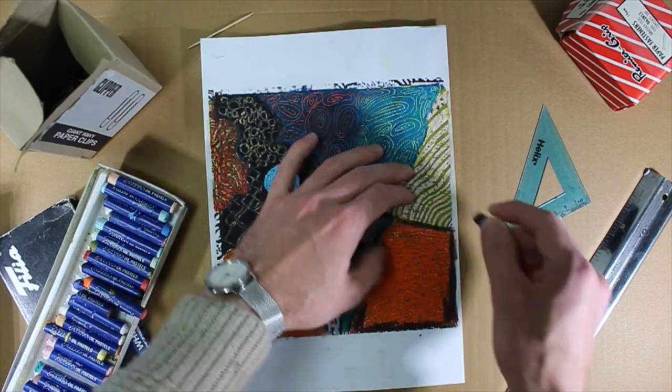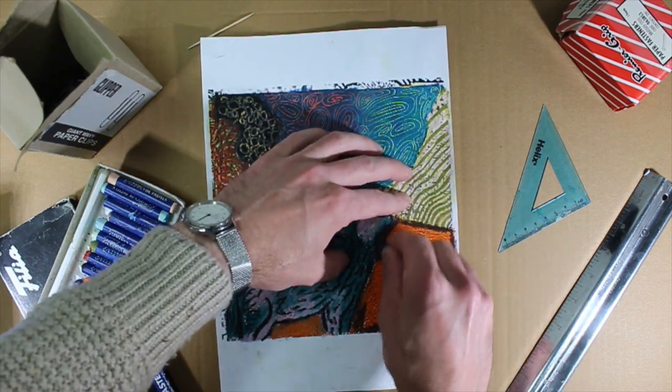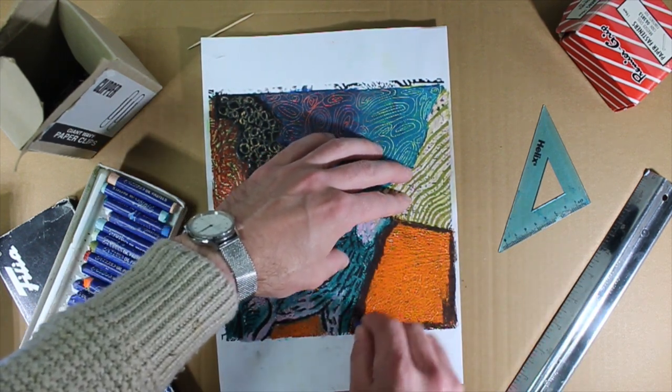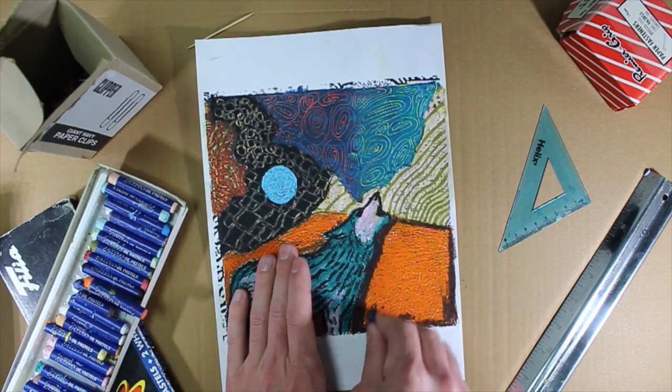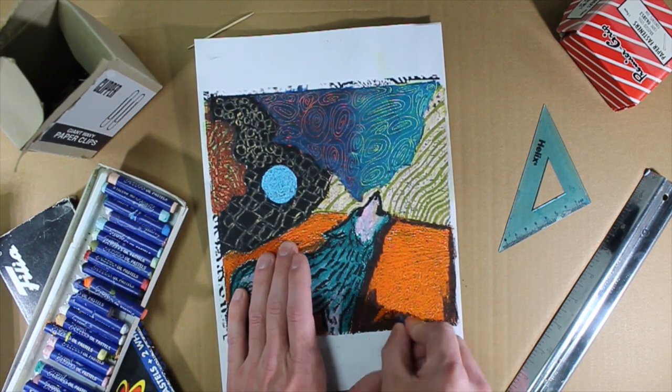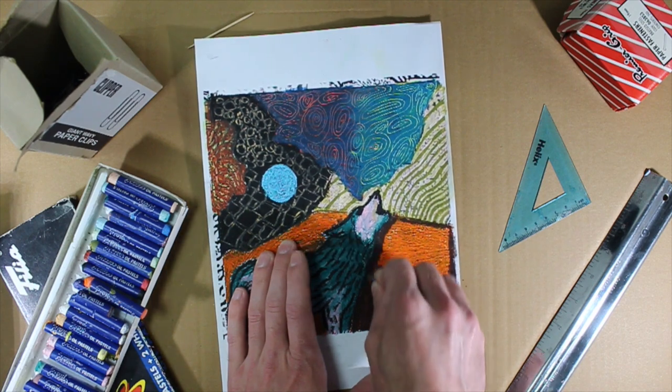When you put the darker color over the top, it's not really going to mix with those lighter colors and it will disguise the lighter layer below. Don't panic, just press down nice and hard and make sure that you cover as evenly as you can.